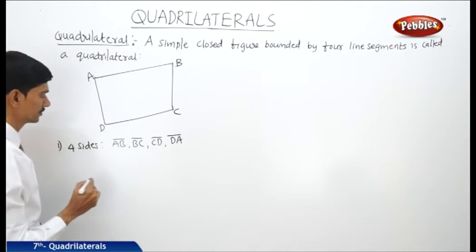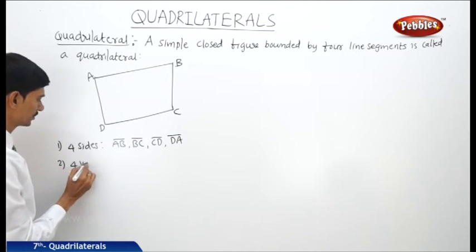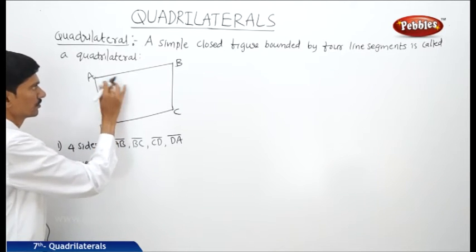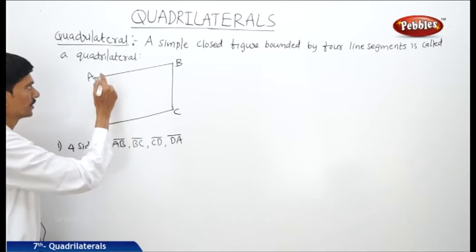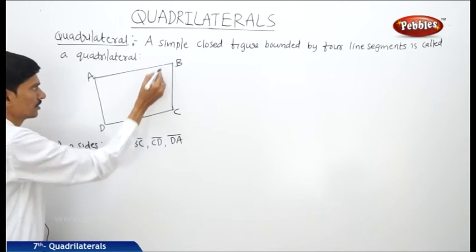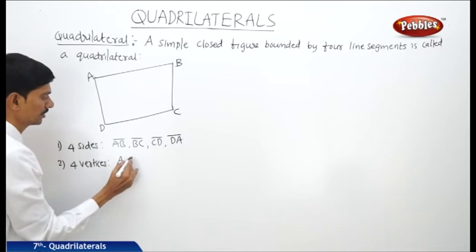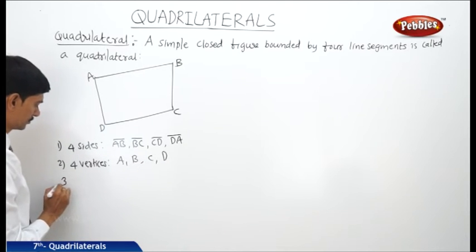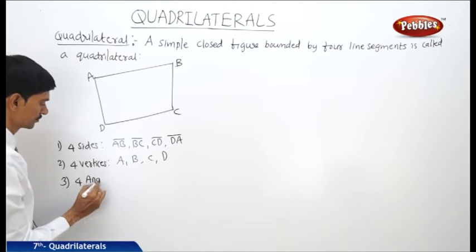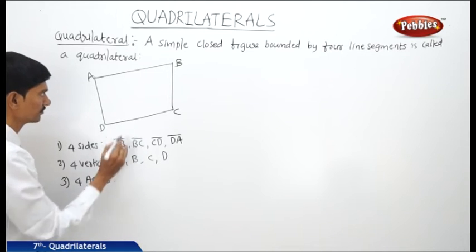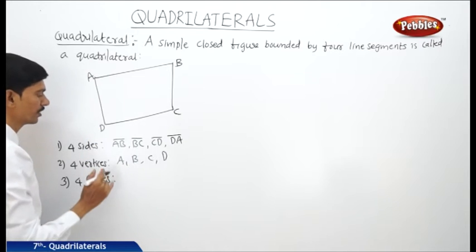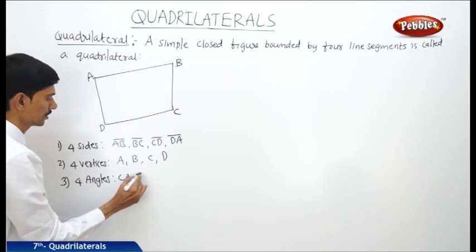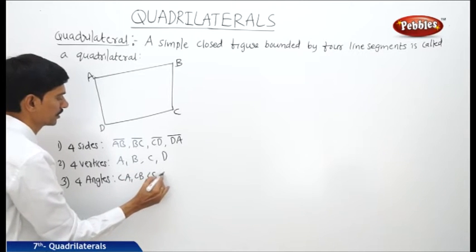So these are the four sides and four vertices. The vertices are where the two sides meet at the corners, so these four corners are called the four vertices: A, B, C, and D.